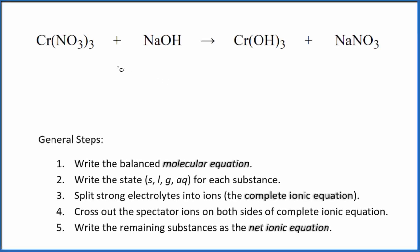Let's write the balanced net ionic equation for Cr(NO3)3 plus NaOH. This is chromium 3 nitrate and sodium hydroxide. So to start out, we need to balance the molecular equation.